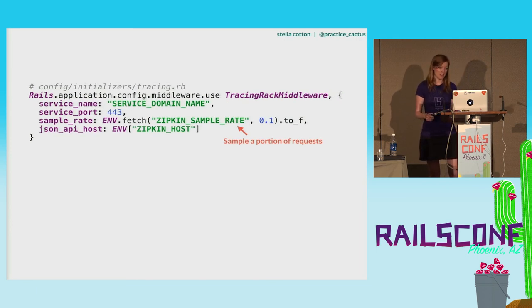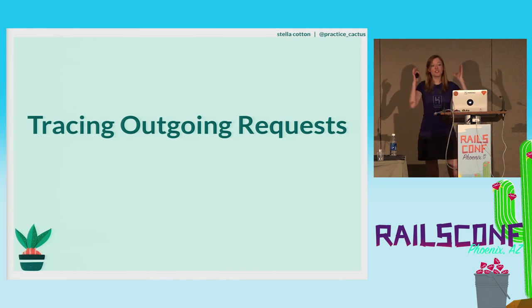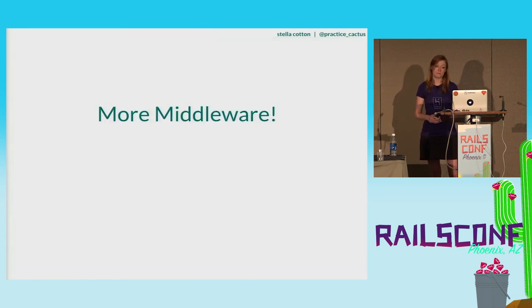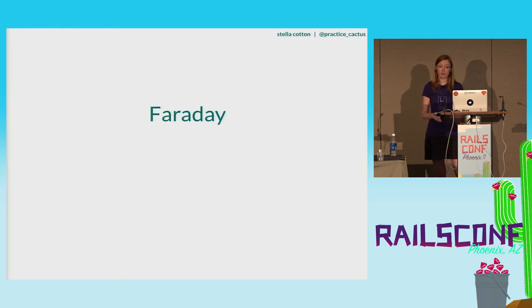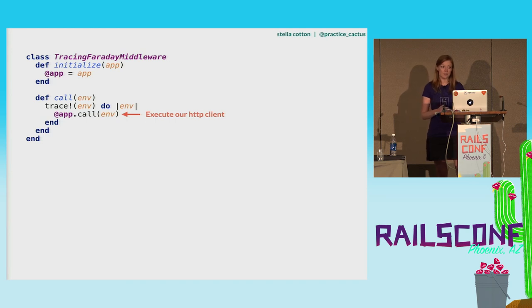You're never going to want to sample every single request that comes in because that is overkill when you have a lot of traffic. Tracing solutions will typically ask you to configure a sample rate. In order to generate that big relationship tree, we also need to record information when our request leaves our system — these can be requests to external APIs like Stripe or GitHub, but if you control that next service, you can keep building up this chain. We can do that with more middleware. If you use an HTTP client that supports middleware like Faraday or XCon, you can easily incorporate tracing into the client.